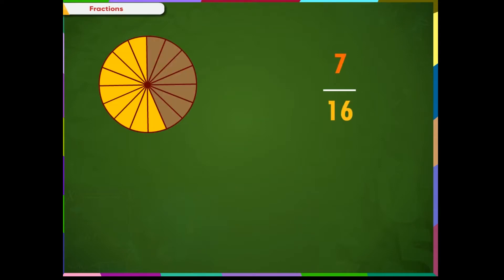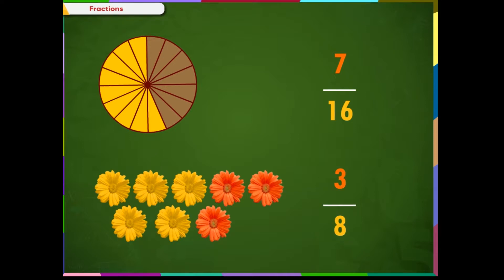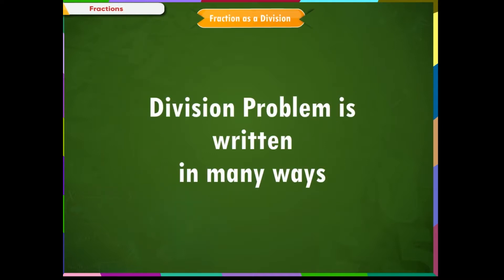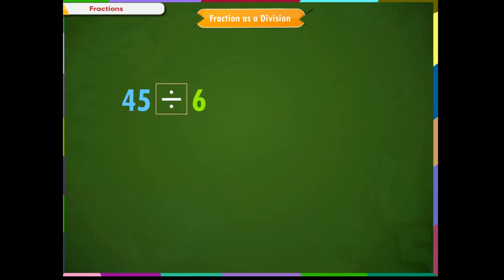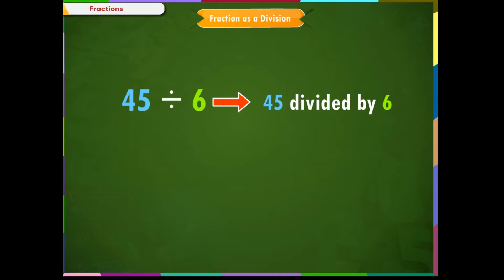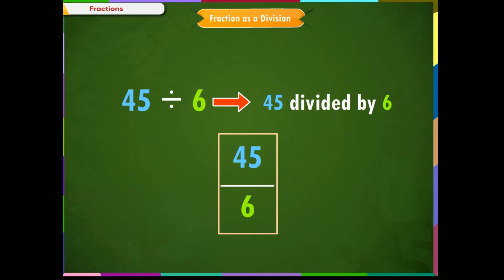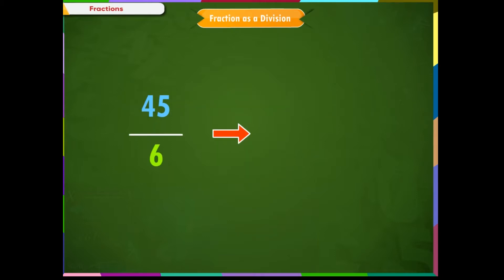So far, we have been seeing that fractions are parts of a region or a collection of things, but fractions can be viewed in a different way also. We know that a division problem can be written in many ways — forty-five divided by six using a division symbol, or written as forty-five divided by six, or as forty-five over six. And this looks similar to a fraction. This means a fraction is actually a division problem but we consider it as a number. The numerator, forty-five, is the number being divided up, and the denominator is the number we are dividing by.